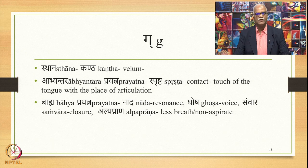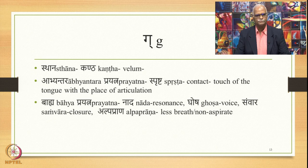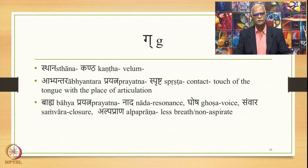Next we have ga. The place of articulation is kantha, abhyantara prayatna is sprashta — contact or touch of the tongue with the place of articulation. The bahya prayatna is now different: it is nada (resonance), ghosha (voice), samvara (closure), and also alpaprana. If we keep a finger on our throat while pronouncing ga, we can sense a vibration as against the pronunciation of ka. That is what gets reflected in these bahya prayatnas: nada, ghosha.